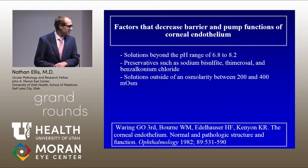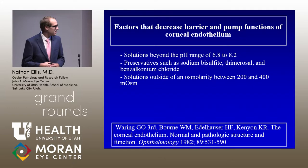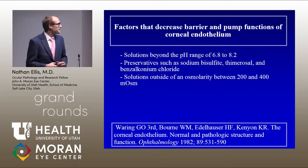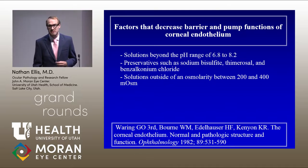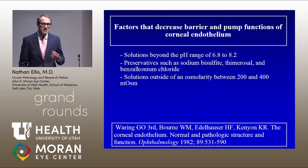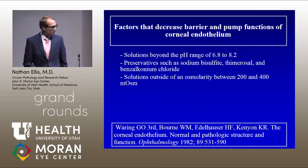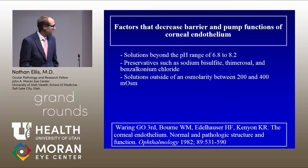Dr. Edelhauser wrote a paper in 1982 — he was essentially the founder of the TASS Suggestion Committee, now known as the TASS Task Force — describing factors that could decrease the pump function of the corneal endothelium. Key factors related to TASS include: solutions injected into the anterior chamber outside the pH range of 6.8 to 8.2, preservatives such as sodium bisulfate, thimerosal, and benzalkonium chloride, and solutions outside the osmolality range of 200 to 400 milliosmols.